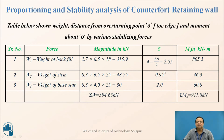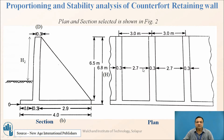The distance x-bar is measured from point O (toe edge) to the centroid of each component. For backfill, it is 4 minus half of 2.9 = 2.55 m. For the stem, it is 0.8 plus half of 0.3 = 0.95 m. For the base slab, it is at the center, i.e., 4/2 = 2.0 m. Key values are 2.95 and 2.55.